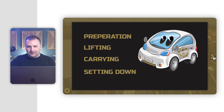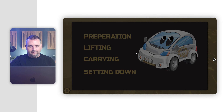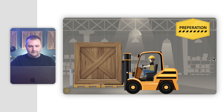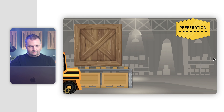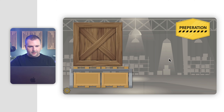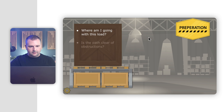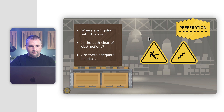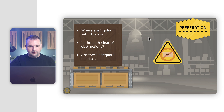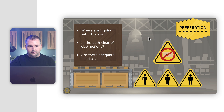We have an animated next button. When preparing to move heavy items at work, there are some questions to ask yourself first — click on the crate to open and reveal the questions: Where am I going with this load? Is the path clear of obstructions? Are there adequate handles? Make sure to look for slippery areas and be alert to stairs, overhangs, or uneven surfaces. When evaluating how you plan to lift the items, does it make more sense to get someone to help?